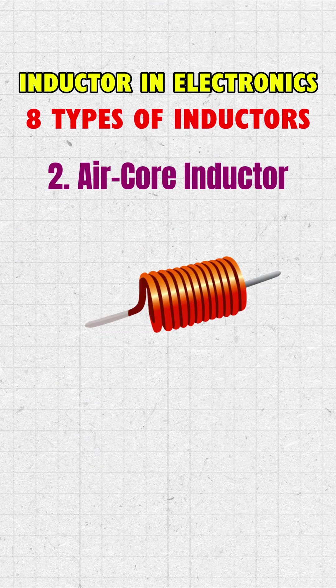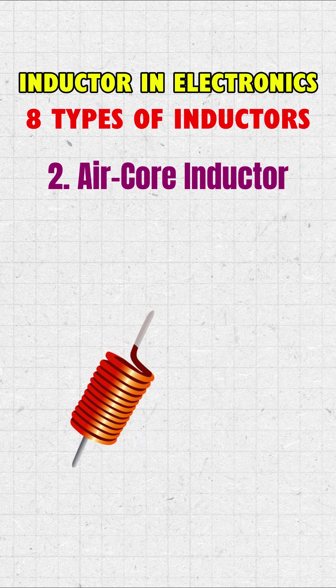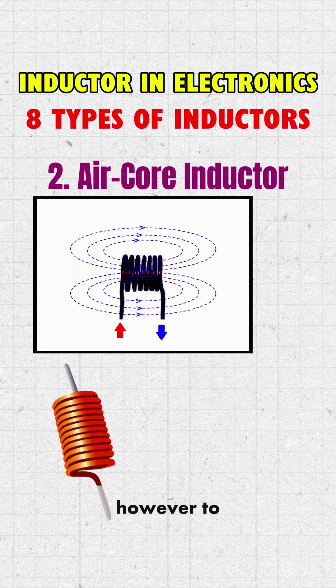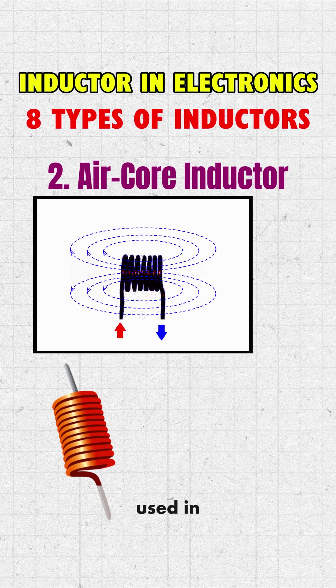2. Air core inductor. This type does not have a core material, which means it does not suffer from core losses. However, to achieve the required inductance, it needs more turns of wire, making it larger in size. Air core inductors are commonly used in radio frequency (RF) applications and high frequency circuits.